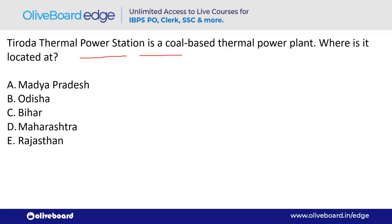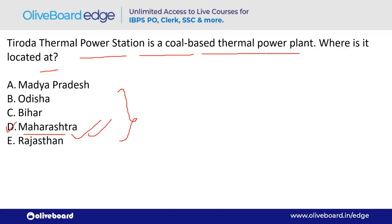The Roha Thermal Power Station is a coal-based thermal power plant. Where is it located? It is located in Maharashtra — option D is the correct answer.